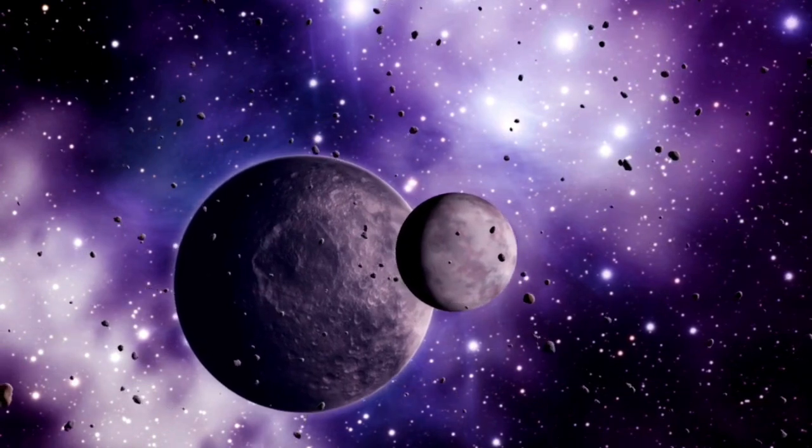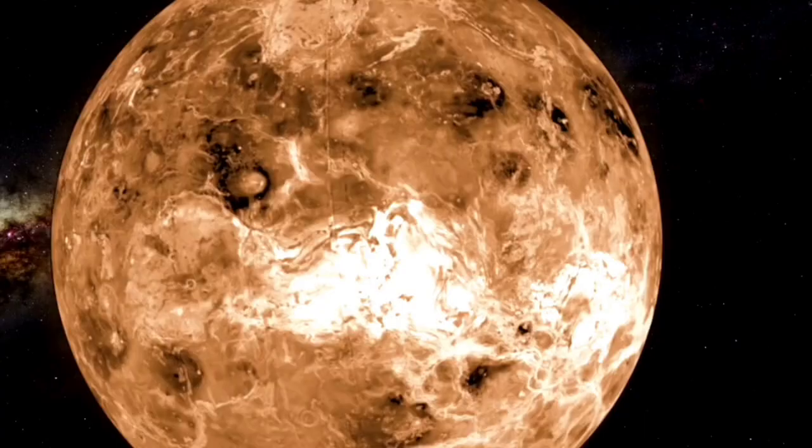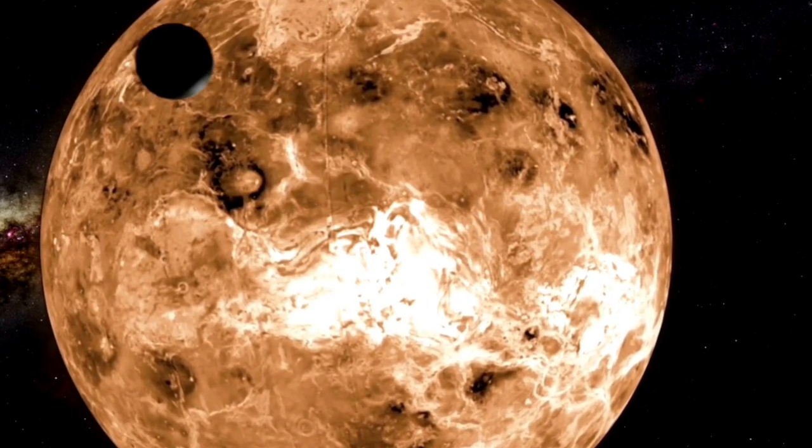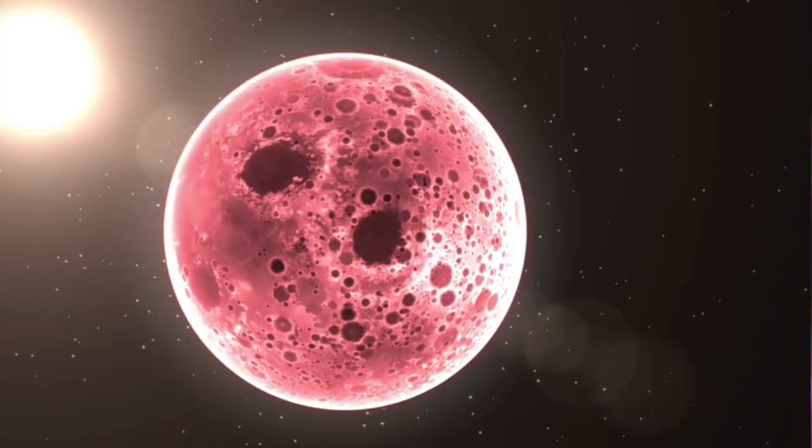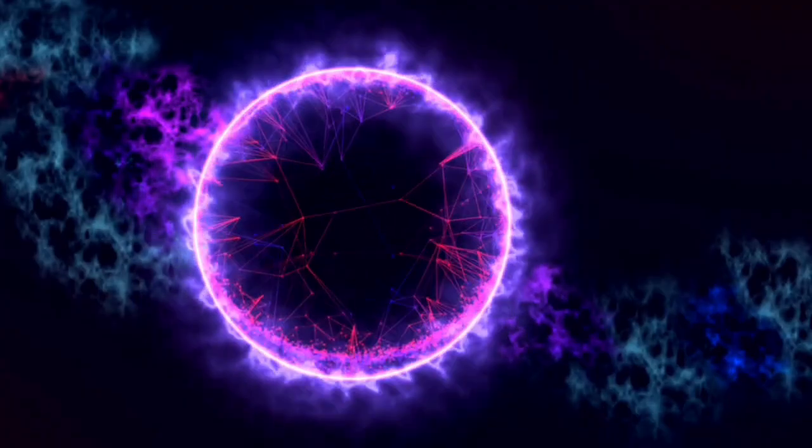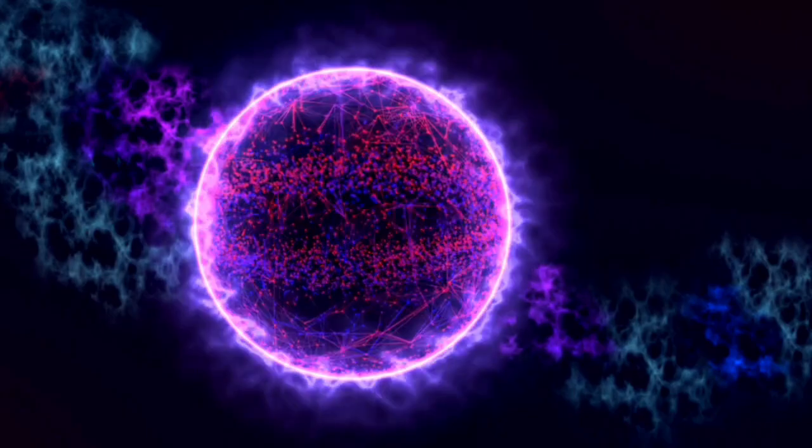Some of the most promising candidates include Kepler-442b, a super-Earth in its star's habitable zone with a high likelihood of supporting life, and Trappist-1e, part of the famous Trappist-1 system. This rocky world has similarities to Earth.